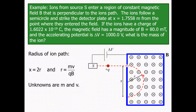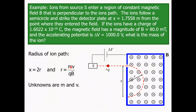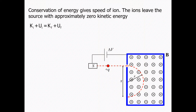The distance X from entry to striking point equals twice the radius: X = 2r. The radius r is given by r = mv / (qB). So X = 2mv / (qB). The unknown quantities are mass m and velocity v, so we use conservation of energy to find the velocity.